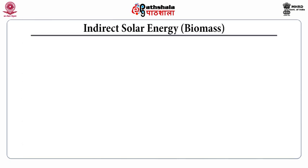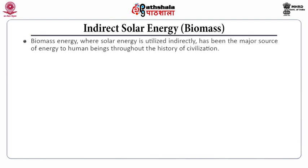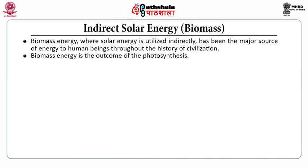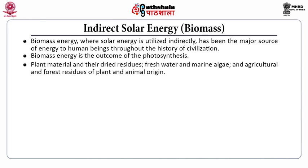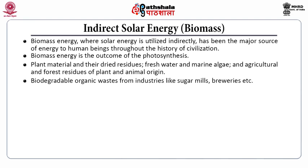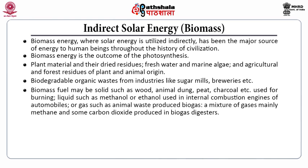Indirect solar energy is related to biomass energy, where solar energy is utilized indirectly and has been the major source of energy to human beings throughout the history of civilization. This biomass energy is the outcome of photosynthesis. It is found in material such as live plant material and their dry residues, fresh water and marine algae, and agriculture and forest residues of plant and animal origin. Biomass also includes biodegradable organic waste from industries like sugar mills, breweries, etc. This fuel may be solid like wood, animal dung, peat, charcoal, etc., which are used for burning.